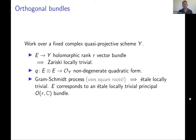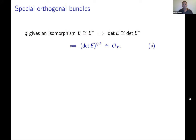An orthogonal bundle is just a bundle with a quadratic form on each fiber varying algebraically. A special orthogonal bundle is a bit trickier — this leads to all kinds of signs. The signs can all be dealt with; for completeness I'll go through them, though they will get worse.